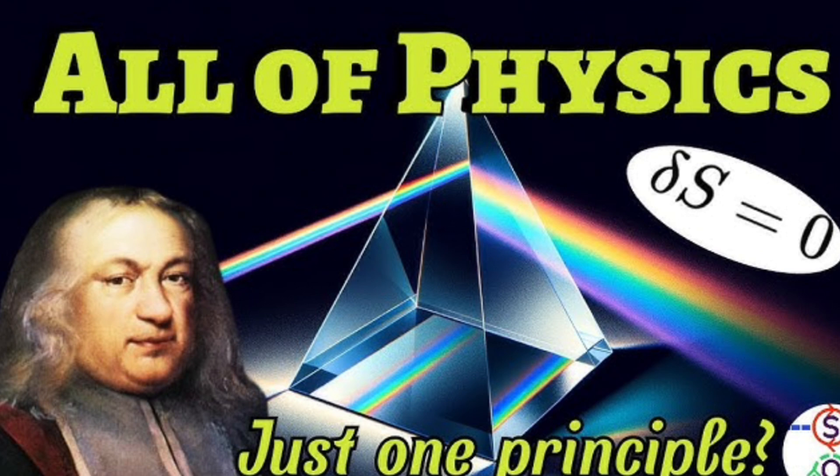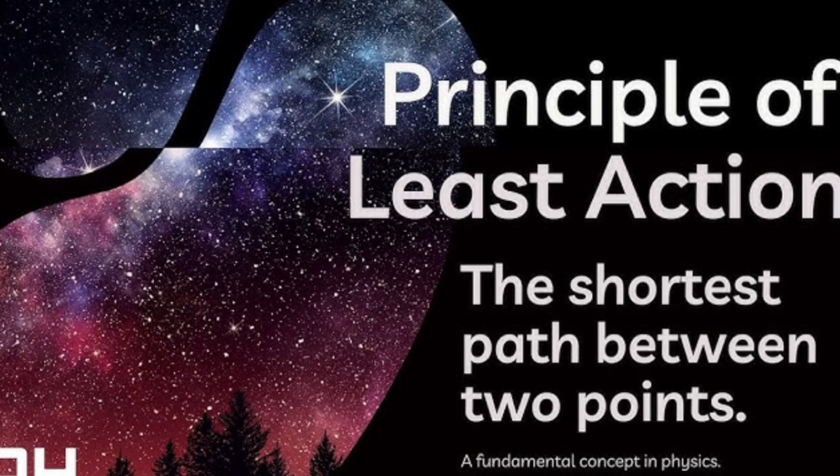Here, L is the Lagrangian, which is the difference between kinetic energy T and potential energy V. L equals T minus V. The integral sums up the Lagrangian over the time interval, giving us the action.